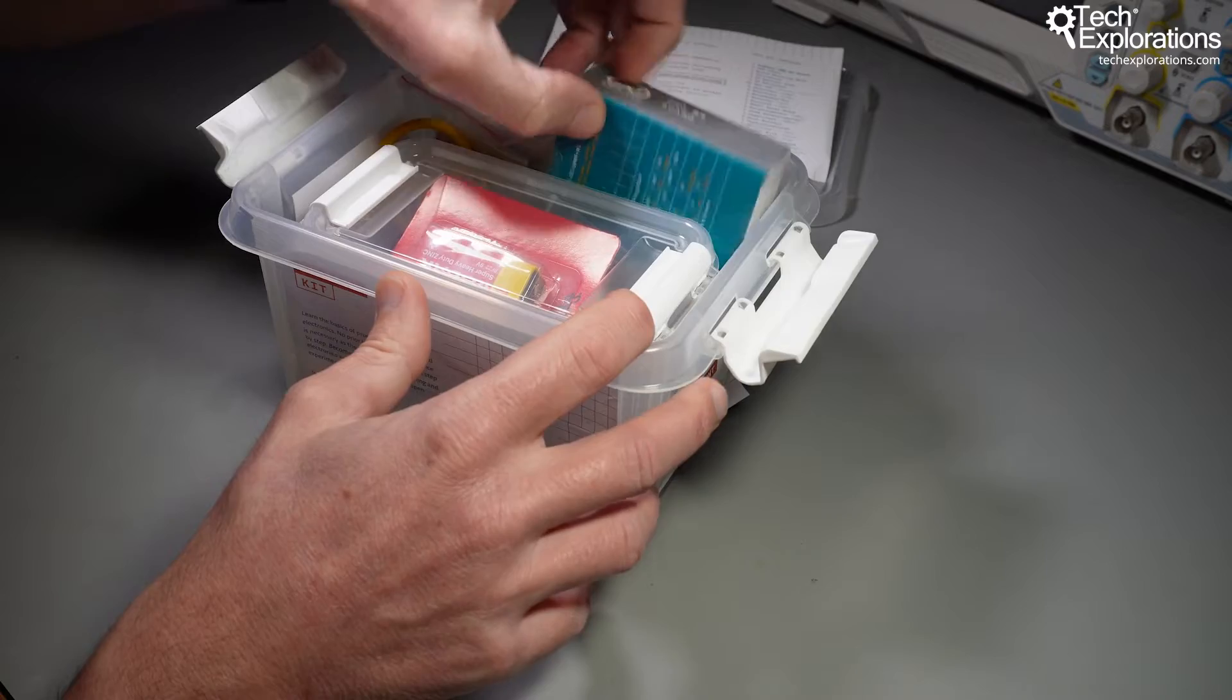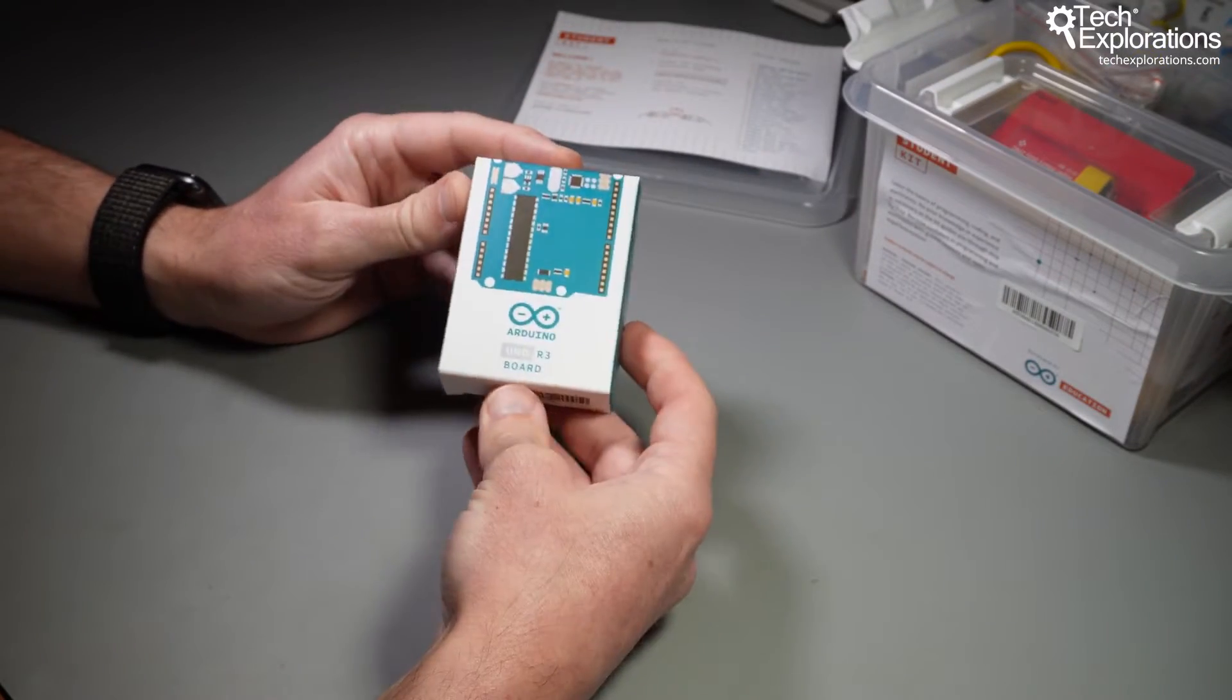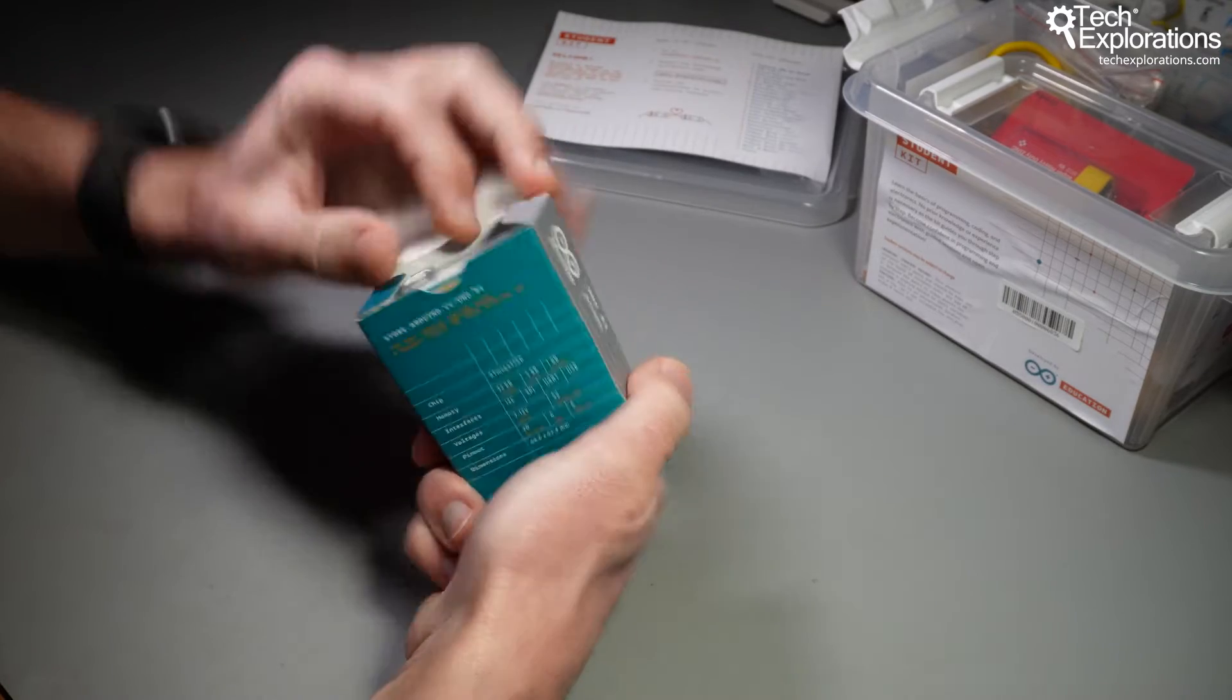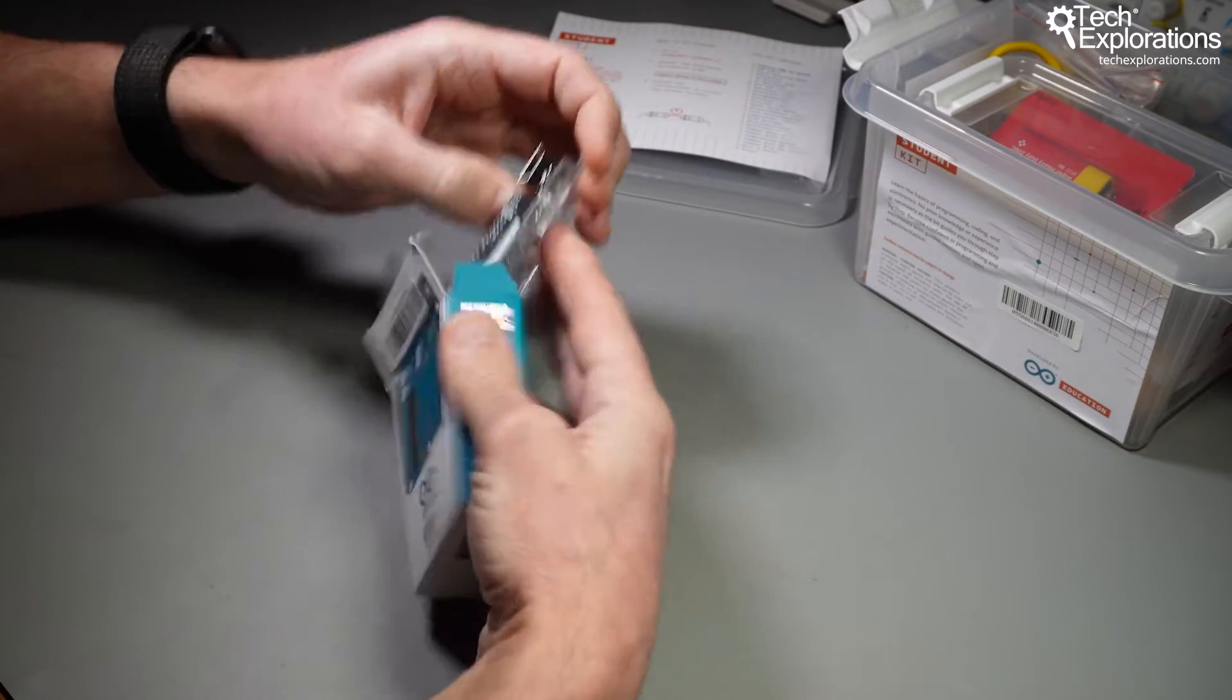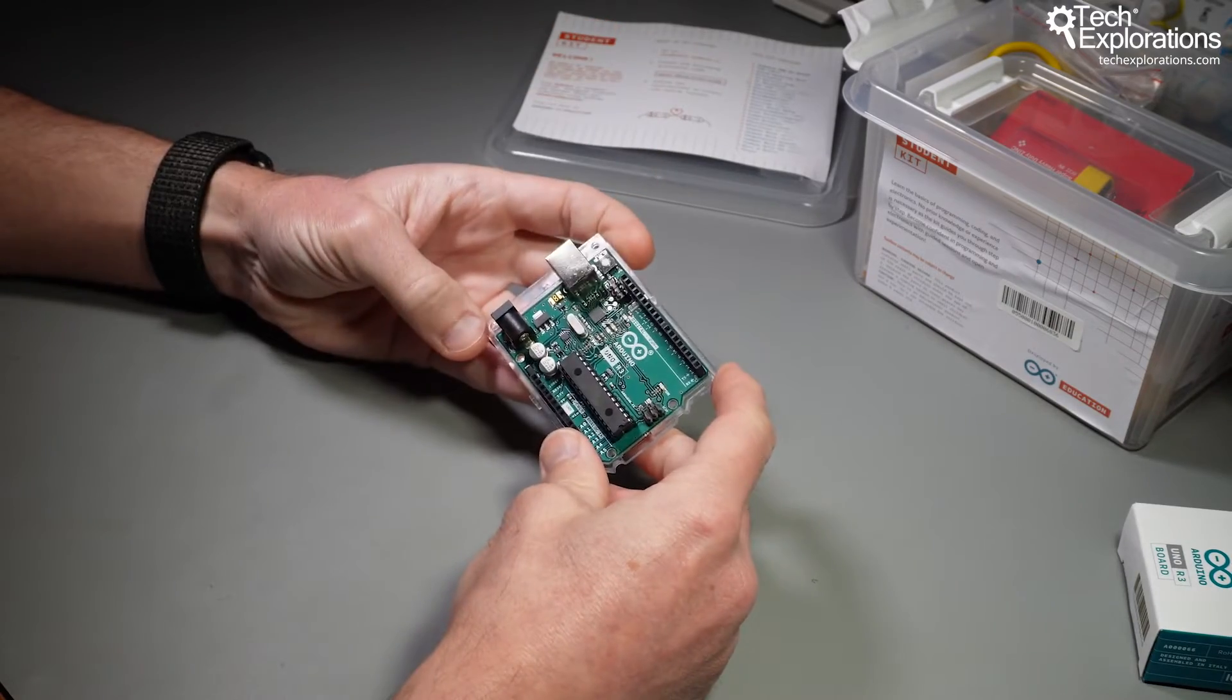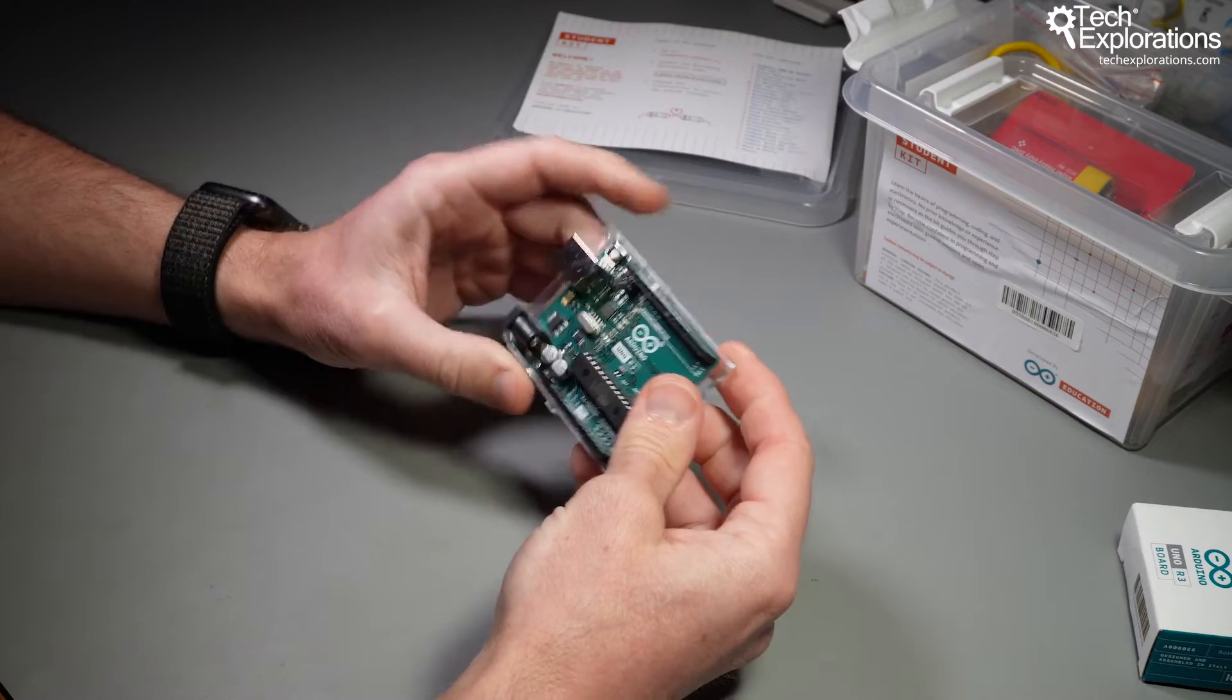So let's have a look inside. First there's an Arduino Uno revision 3 board, standard Arduino Uno with its plastic base, the most modern of the Arduino Unos.